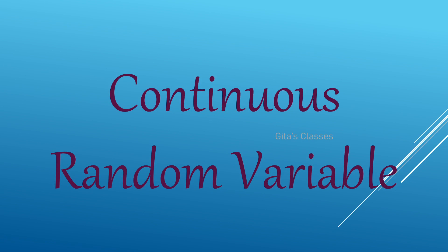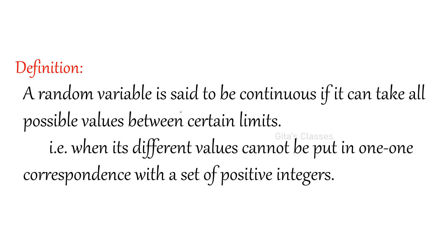Hi everyone, welcome to Geeta's classes. Today we are going to see continuous random variable. A random variable is said to be continuous if it can take all possible values between certain limits. Its values cannot be put in one-to-one correspondence between the set of positive integers. I have explained the difference between discrete random variable and continuous random variable with examples.